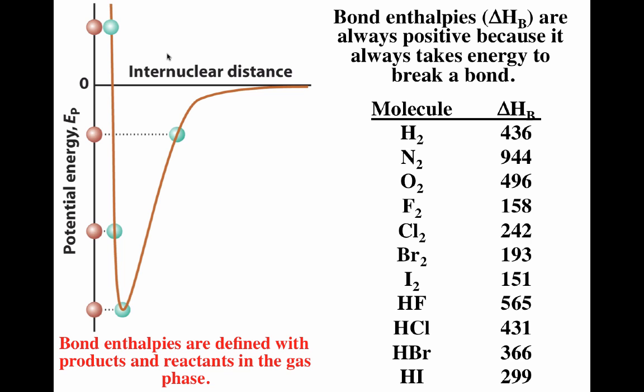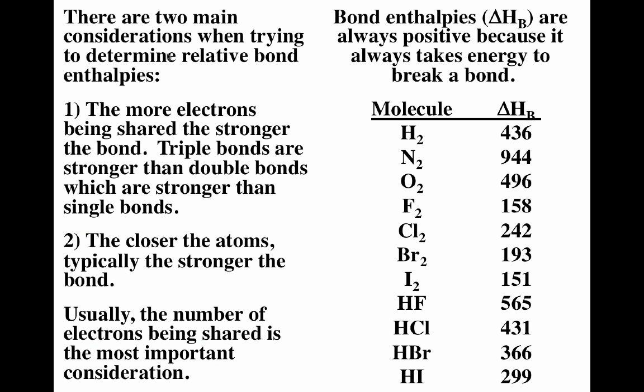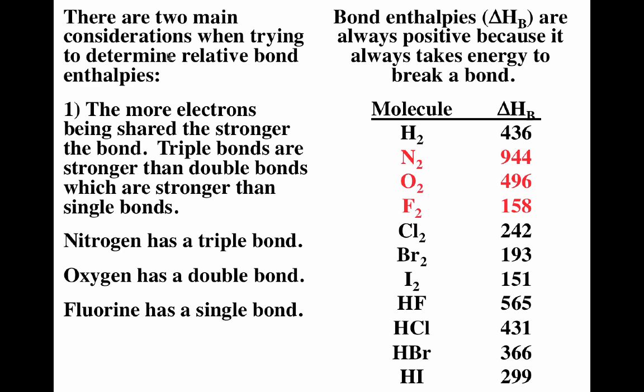When considering bond enthalpy for different bonds, there are two things to consider: the number of electrons being shared by the two atoms, and how close the atoms are. The more electrons being shared, the stronger the electrostatic attraction between nucleus and electrons, the stronger the bond, and the larger the bond enthalpy. So triple bonds are stronger than double bonds, which are stronger than single bonds. For example, N₂ has a triple bond, O₂ has a double bond, and F₂ has a single bond — and you can see there is a huge difference in bond enthalpies.